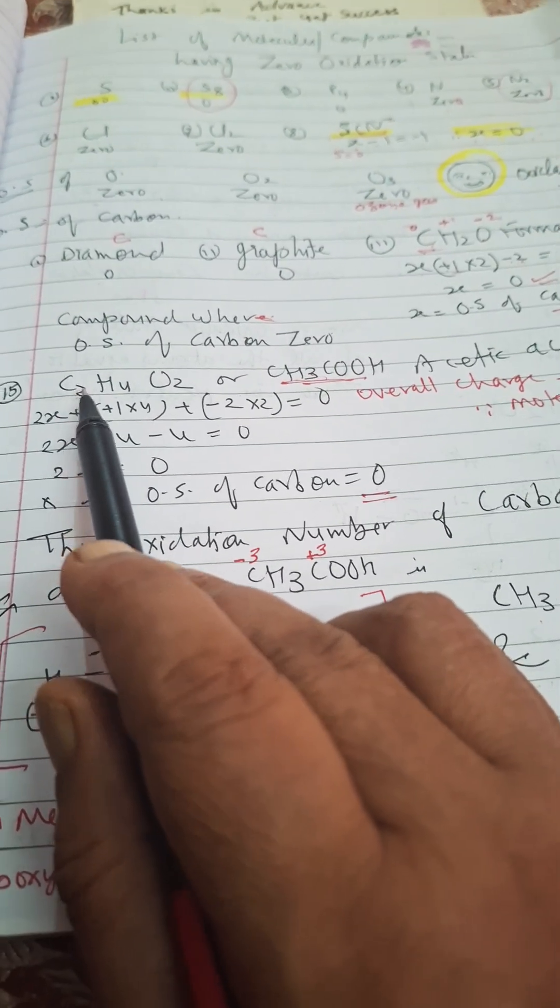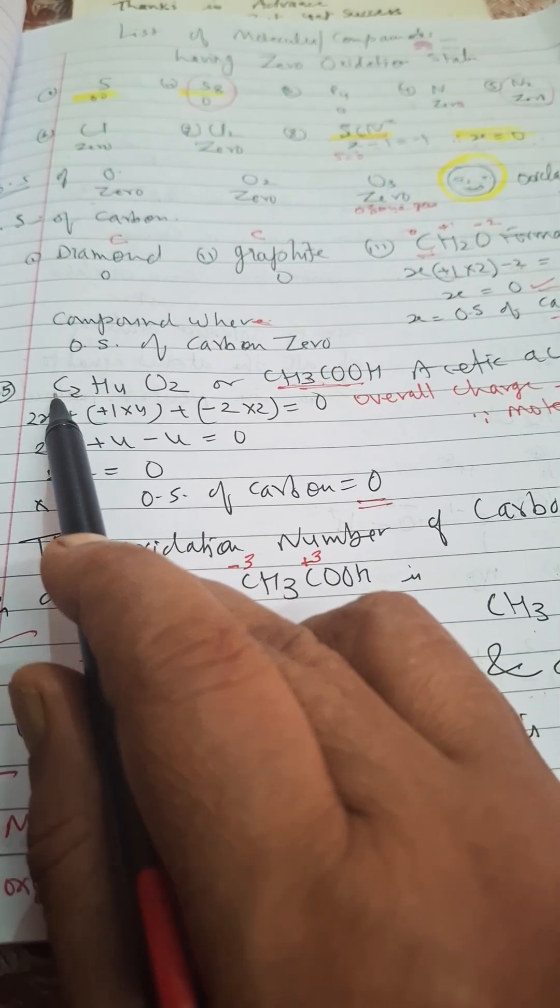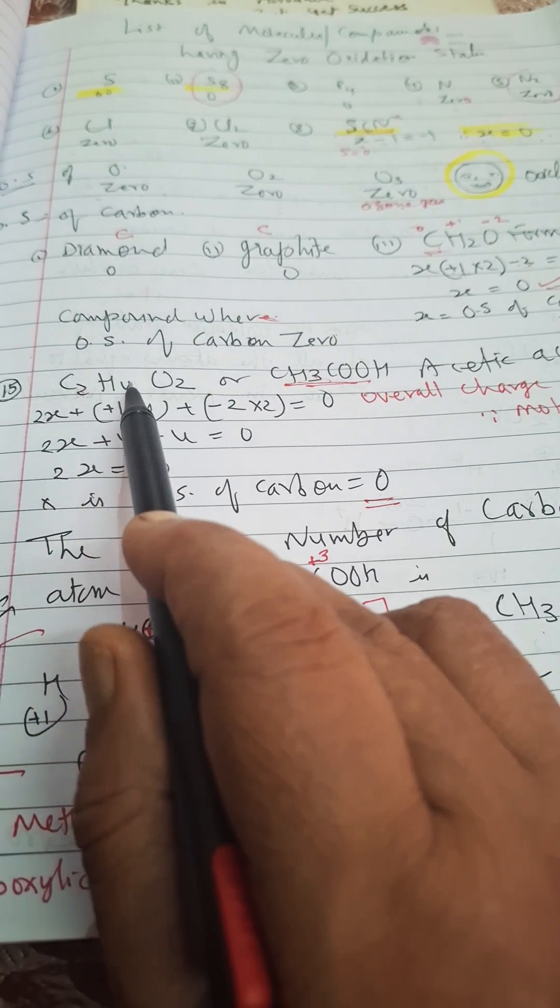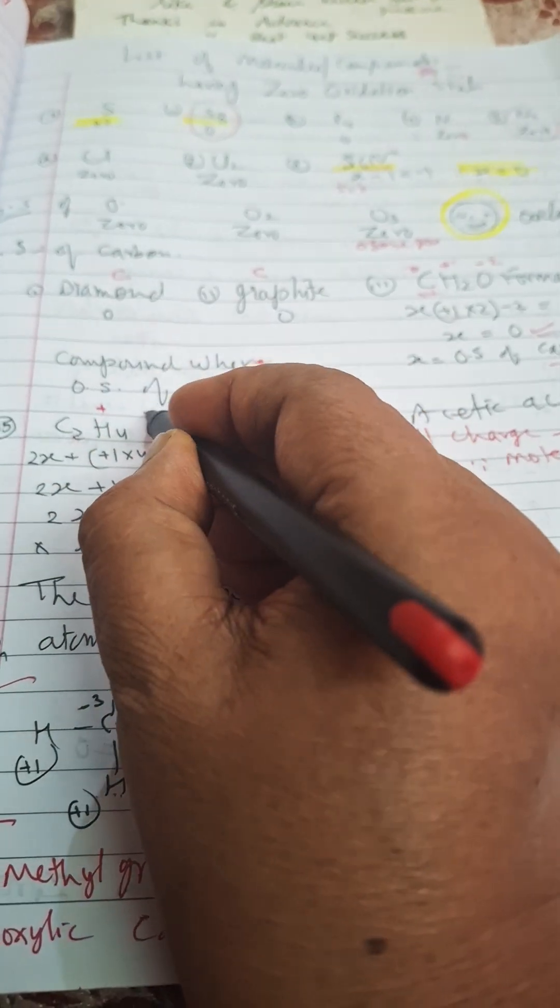Now here, suppose carbon is having two oxidation state, x oxidation state, two times carbon, so two times x plus hydrogen is having plus one oxidation state and oxygen...